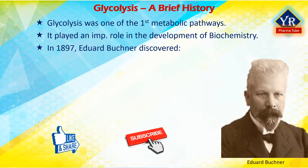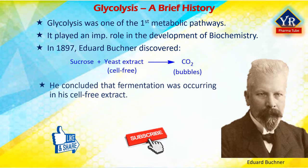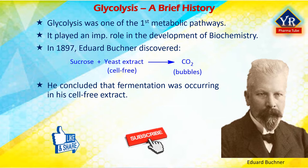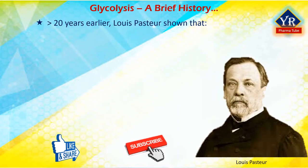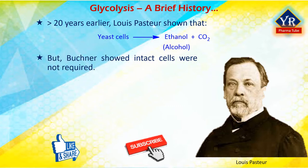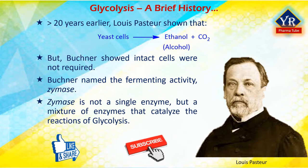In 1897, Edward Buchner discovered that bubbles of carbon dioxide were released from a mixture of sucrose and a cell-free yeast extract. He concluded that fermentation was occurring in his cell-free extract. More than 20 years earlier, Louis Pasteur had shown that yeast cells ferment sugar to alcohol, producing ethanol and carbon dioxide, but Buchner showed that intact cells were not required. Buchner named the fermenting activity Zymase.